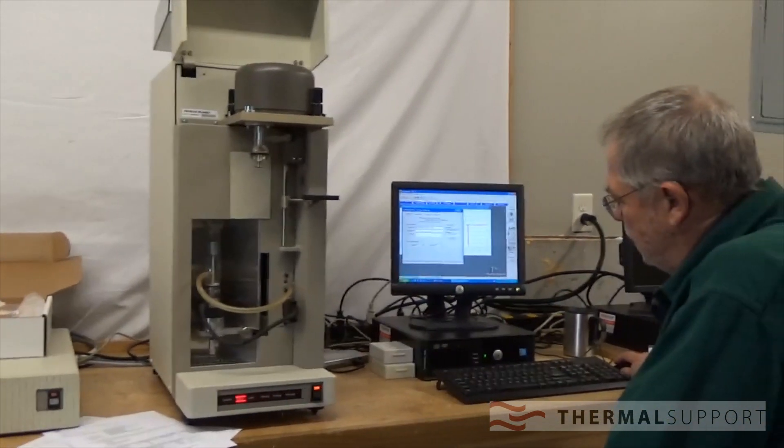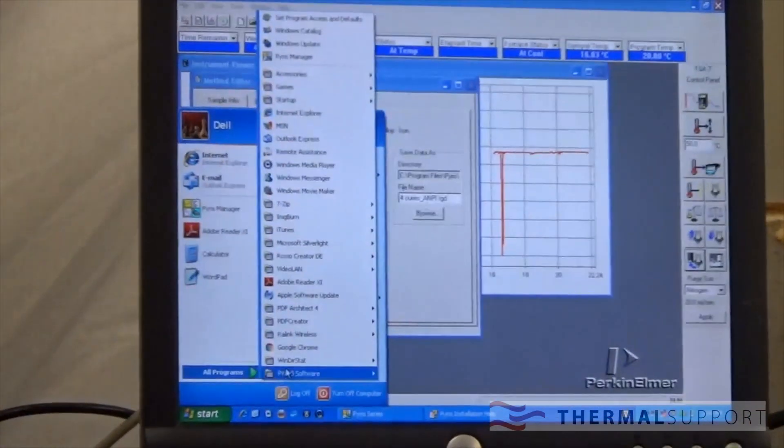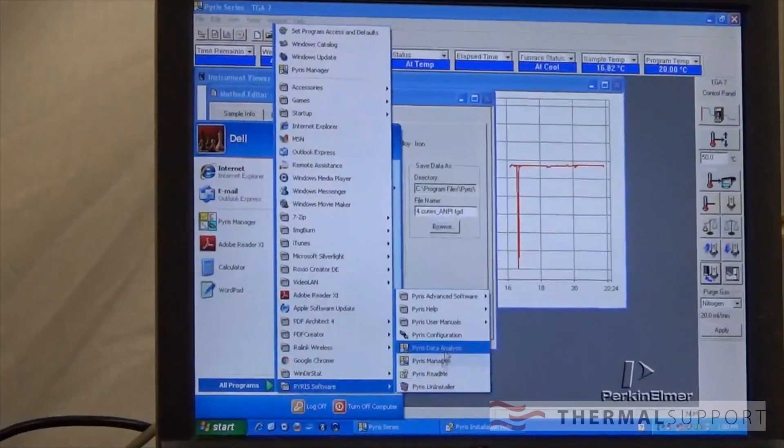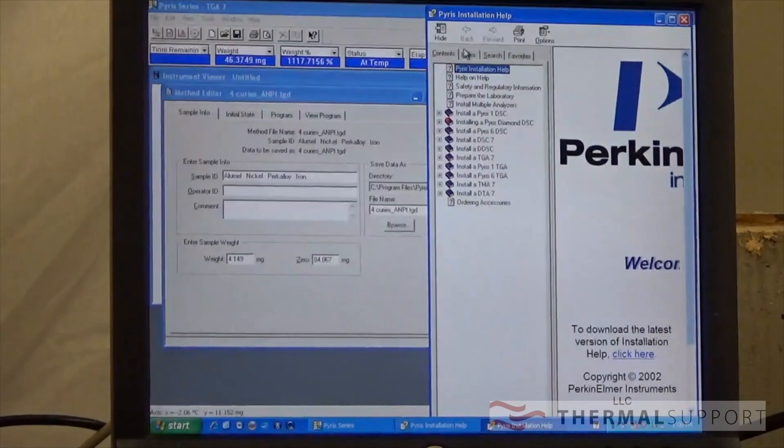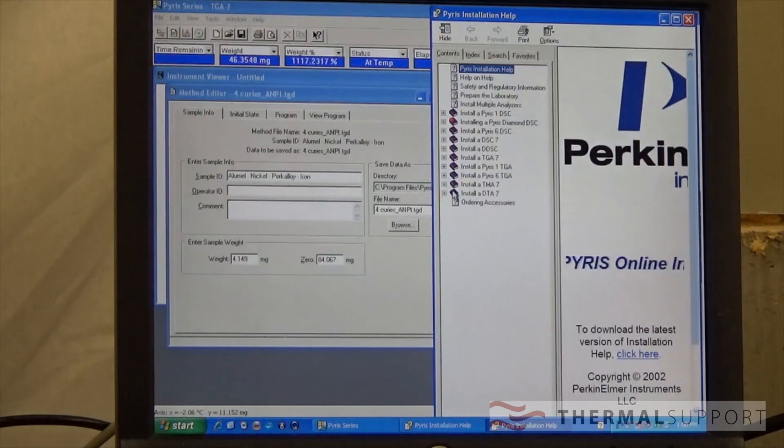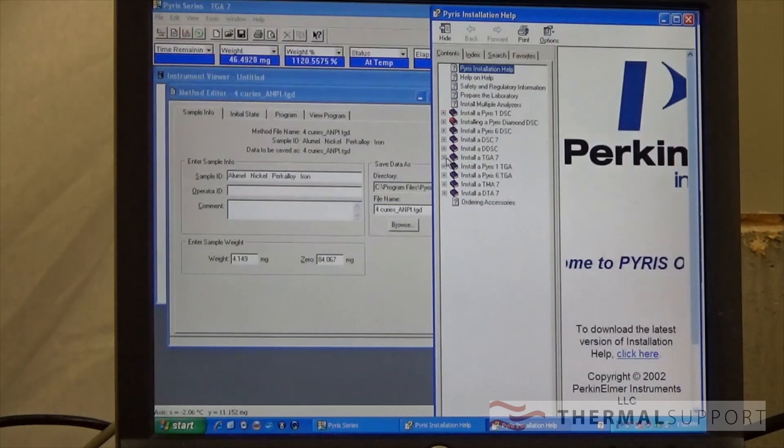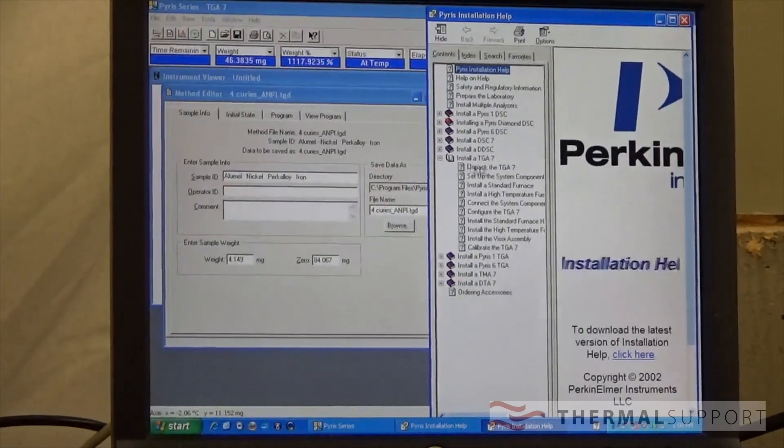If you go to Start, Programs, Pyris, Pyris Help, Pyris Installation Help, you see a long list of instruments that were available at the time that 5.0 came out. This will still run on 9, and actually nobody's found any bugs on it on 10. It's hard to get 10 functioning. But right here, at 5.0, there's a list of what was written then.